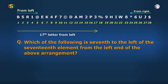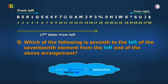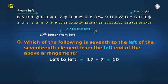So, as we are moving from left to left, we simply do subtraction, and 17 minus 7 is equal to 10. This means the tenth element from the left in the given arrangement will be the answer, and the tenth element is 7.